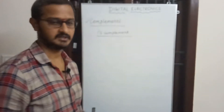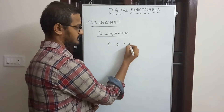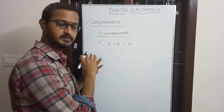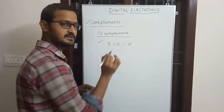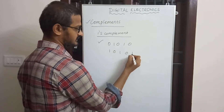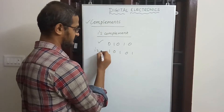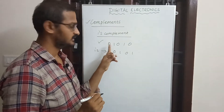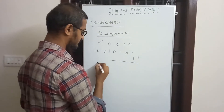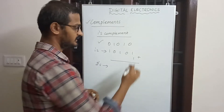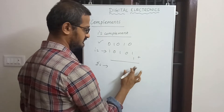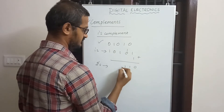The 1's complement is obtained by inverting all bits — replacing 0s with 1s and 1s with 0s. For example, we assign a binary number. So 1, 0, 1, 0, 1 — this is the 1's complement of the number. Then adding 1 to this gives: 1 0 0 1 1 0 1 1 — and this is your 2's complement number.